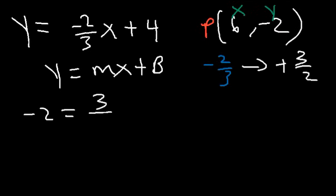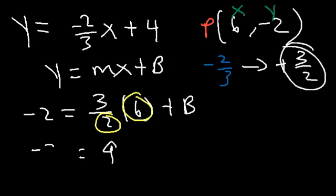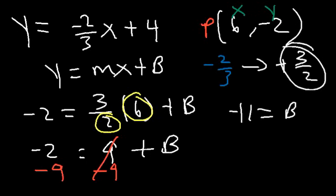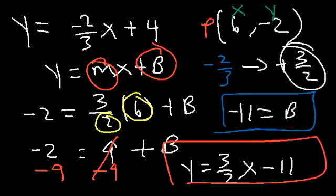So negative 2 is equal to 3 over 2 times 6, plus b. 3 halves times 6: 6 divided by 2 is 3, and 3 times 3 is 9, so 3 halves times 6 is 9. To isolate b, subtract both sides by 9: negative 2 minus 9 is negative 11. So b is equal to negative 11. Plugging in m and b: m is 3 over 2 and b is negative 11, so this is the equation of the line in slope-intercept form: y equals 3 over 2 x minus 11.